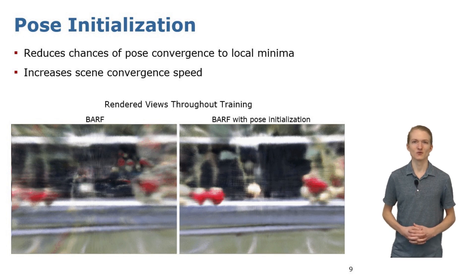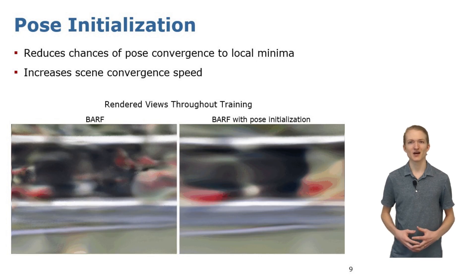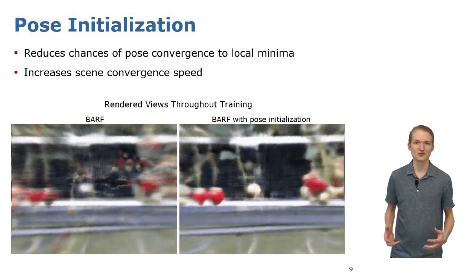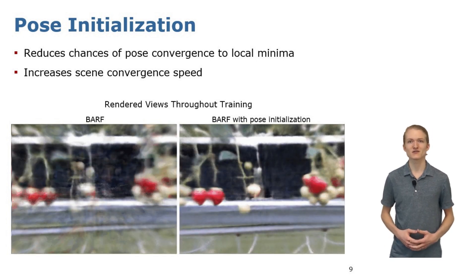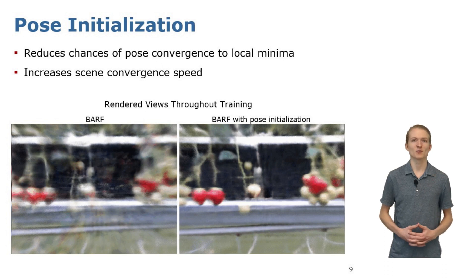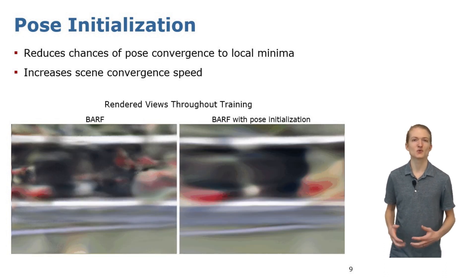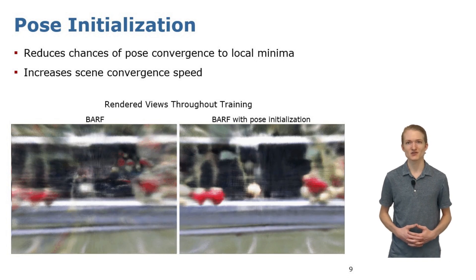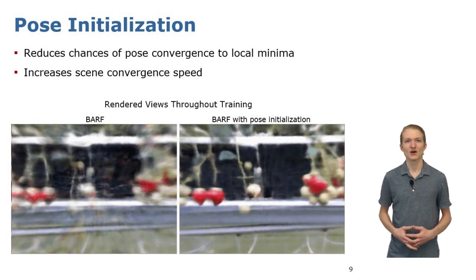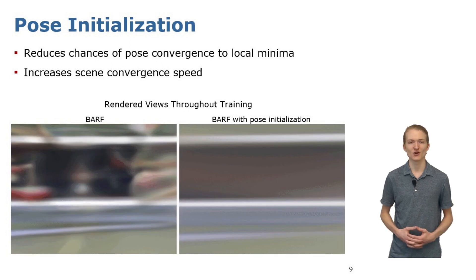The first of our system's improvements over prior works is a classical pose initialization strategy. In agricultural scenes like ours, with a large number of repeated visually similar features such as strawberry clusters, poses can easily converge to incorrect local minima. Here we show that novel renderings from a prior work, BARF, are able to more accurately and quickly converge when we modify BARF with our pose initialization strategy, where we use a classical SLAM system to provide an initial guess of the poses for all input images.